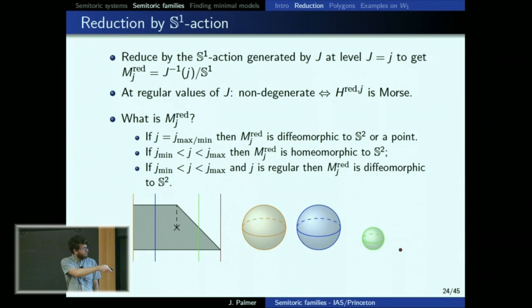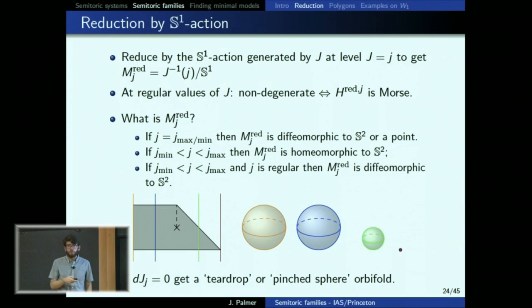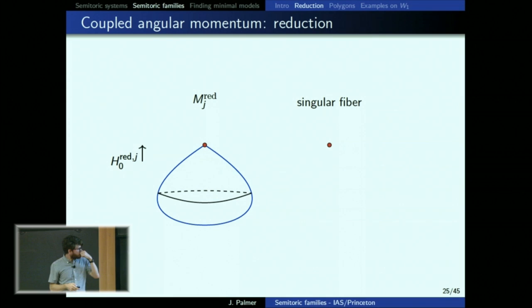In the non-singular case: if I reduce at the orange level I get a sphere, which is the fixed sphere; at the blue level I get a sphere; the green level has a smaller sphere. At a very corner point, I just get a point. But at the not-regular points — the interesting ones — you get a teardrop or pinch sphere: a sphere with little pinches corresponding to the fixed points of J.